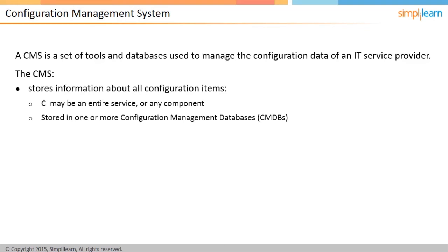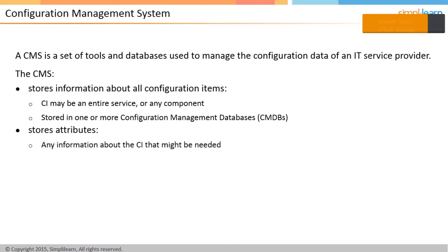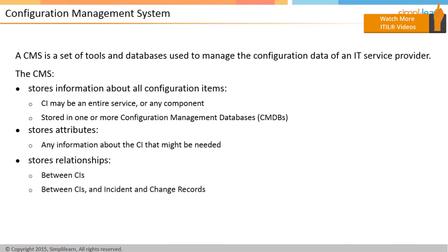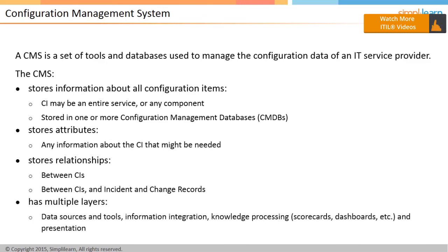The CMS includes information about incidents, problems, known errors, changes, and releases, as well as data on employees, suppliers, locations, business units, customers, and users. The CMS stores attributes and any other required information about the CI, and also stores the relationships between CIs and between CIs and incident and change records.